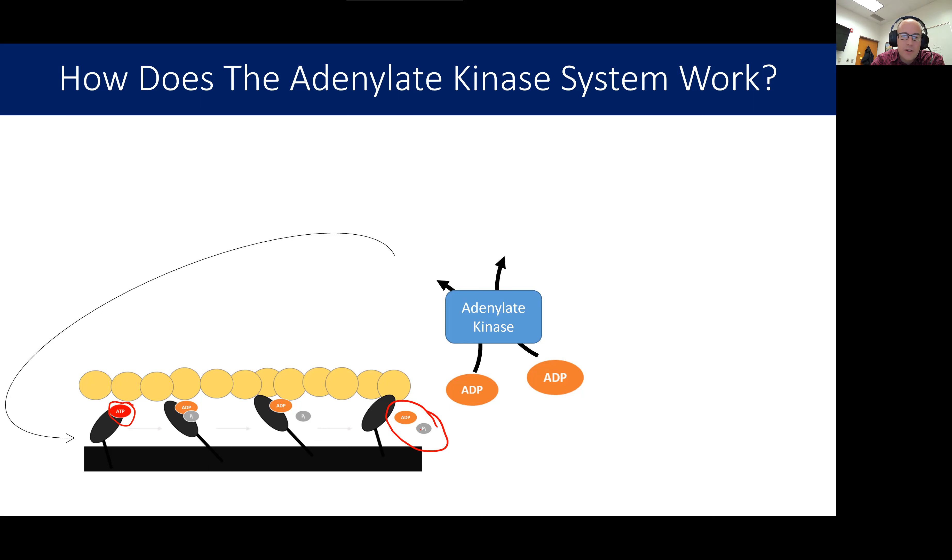And it would be nice if you could just shove that phosphate right back on to the ADP to form ATP, but that would go against energy gradients. And so that doesn't happen naturally. So we have to somehow get something to transfer it over.